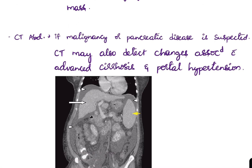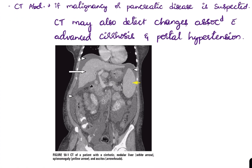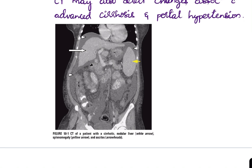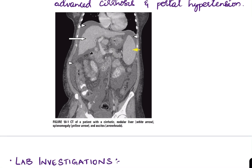If malignancy or pancreatic disease is suspected, a CT scan of the abdomen is performed, with contrast when necessary. CT may also detect changes associated with advanced cirrhosis and portal hypertension. In this image from Harrison's, the arrow indicates a cirrhotic and nodular liver, the yellow arrow shows splenomegaly, and the arrowhead shows ascites.